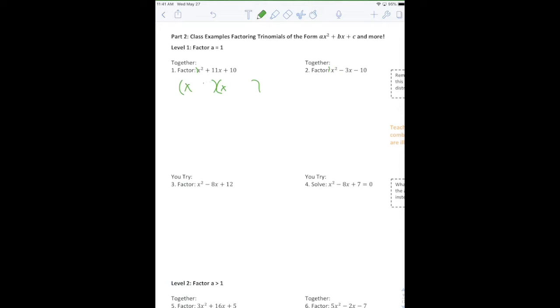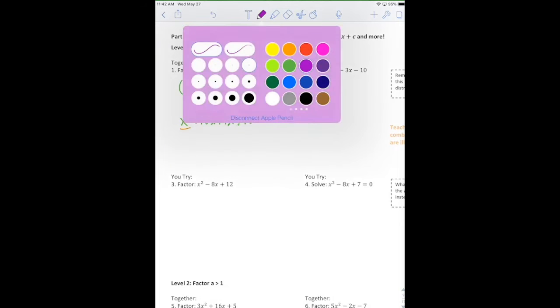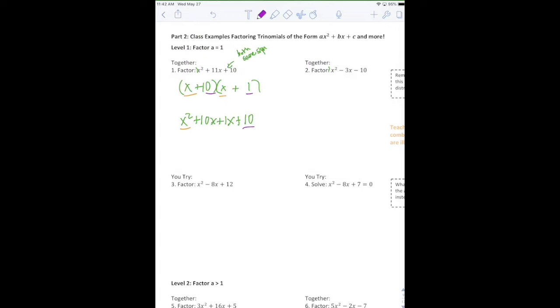So you know that when you break it into two binomials, you'll have an x and an x. So you'll automatically get your x squared. And then you need to figure out what multiplies to 10 and adds to 11. So we would have a 10 and a 1. And we know that it's a positive and a positive because if they're multiplying to a positive, they're both the same sign.